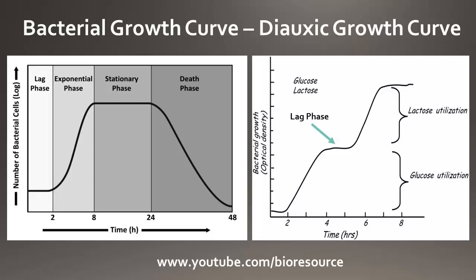That's why there is a lag phase after the first exponential phase in the diauxic growth curve. Once all the enzymes required for lactose metabolism are prepared and the lac operon is turned on, the bacteria enter a second exponential phase. So the initial exponential phase is the glucose utilization phase, followed by a lag phase — also called the preparatory phase — for generating the enzymes required for metabolizing lactose.